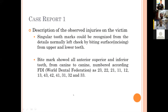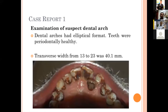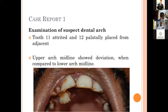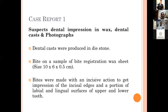The observed injuries on the victim included single tooth marks recognizable from details on the left cheek by biting surfaces. Bite marks showed all anterior superior and inferior teeth from canine to canine, numbered three to three. The suspect's dental arches were in an elliptical format; teeth were predominantly healthy. The transverse width from canine to canine was 40.1 mm. Tooth 1-1 was attrited and tooth 1-2 was palatally placed from the adjacent. The upper arch midline showed deviation when compared to the lower arch midline. The suspect's dental impression in wax and dental cast photographs were obtained, and bites were made with incisive action to get an impression of the incisive edges and a portion of the labial and lingual surfaces of the upper and lower teeth.